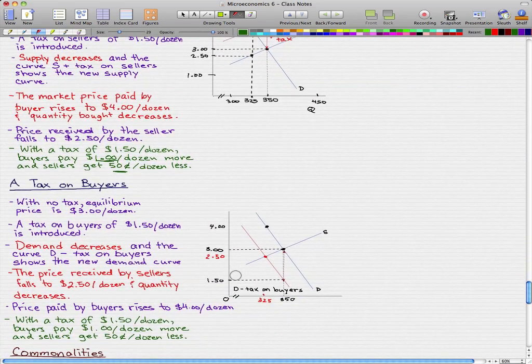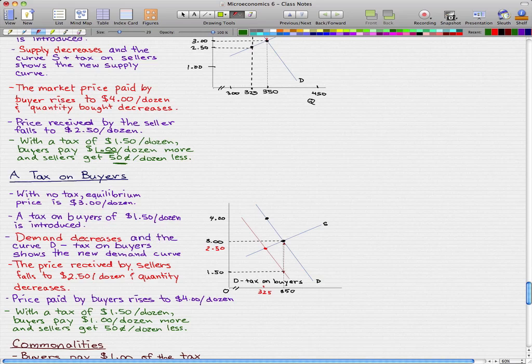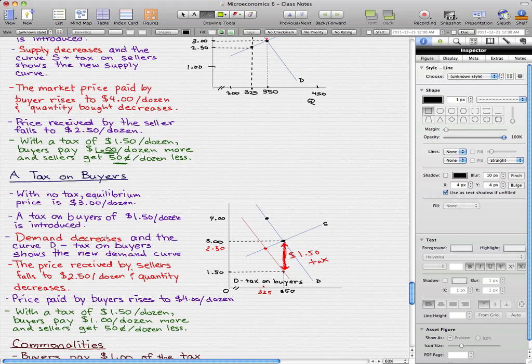Now let's take a look at the buyer's side. It's pretty much the same thing. With no tax, the equilibrium price is $3 per dozen. Now a tax on buyers of $1.50 per dozen is introduced. That's the $1.50 tax shown by this arrow here.